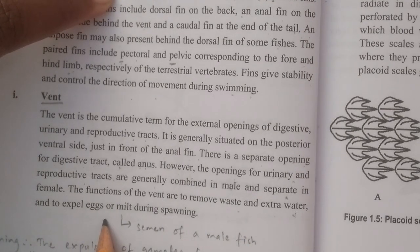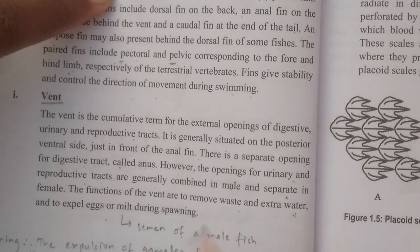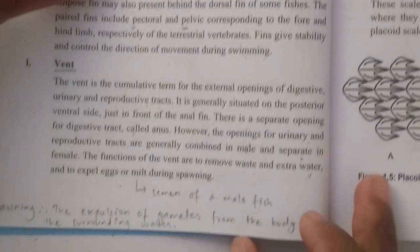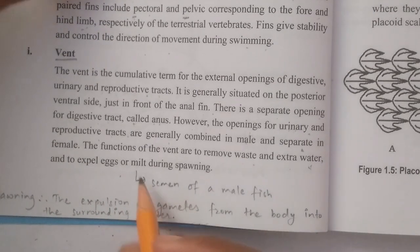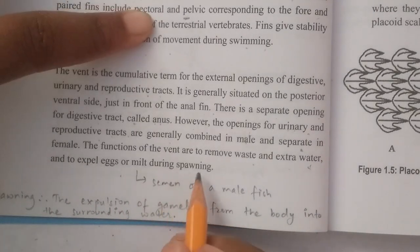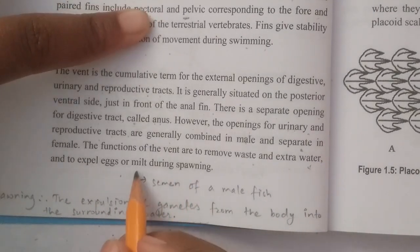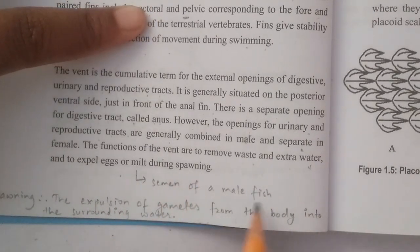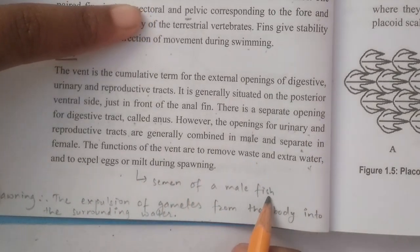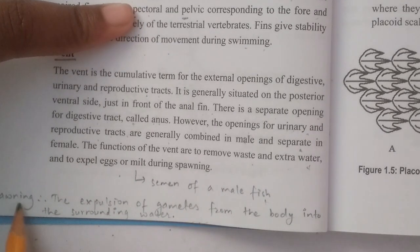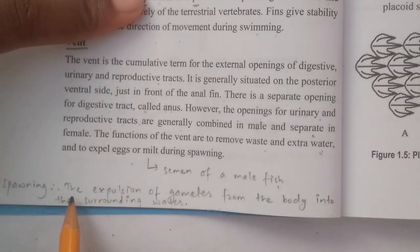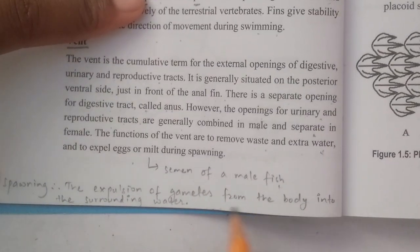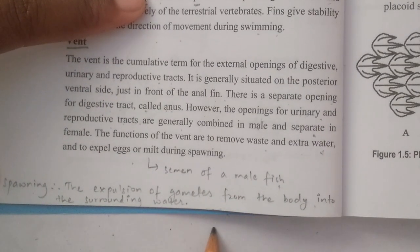Other functions of the vent include to expel eggs or milt (sperm) during spawning — that is, the expulsion of gametes from the body into the surrounding water.